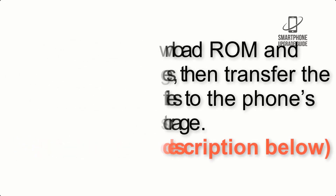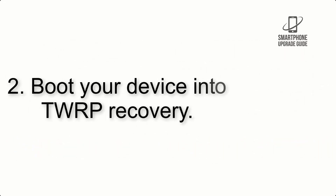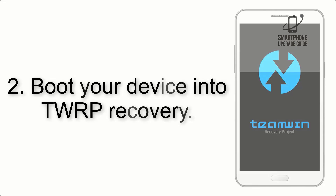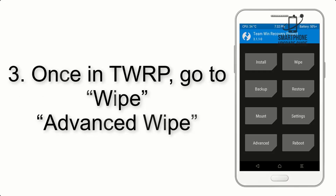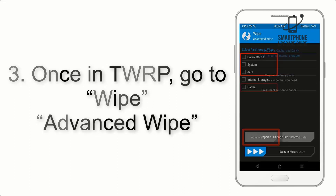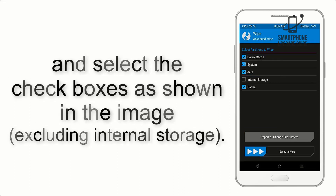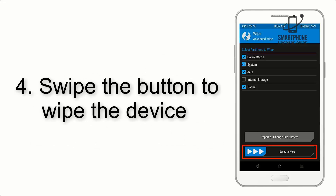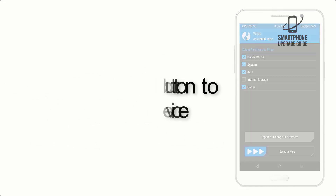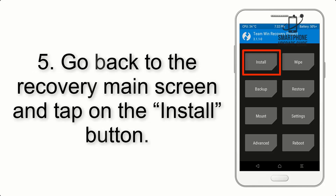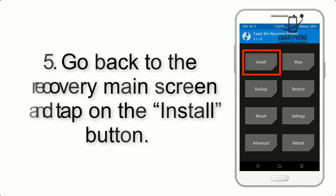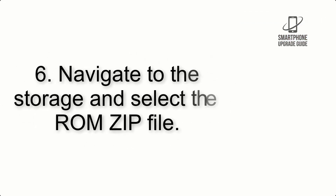Step 2: Boot your device into TWRP recovery. Once in TWRP, click on Advanced Wipe and select the checkboxes as shown in the image, excluding internal storage. Step 4: Swipe the button to wipe the device.